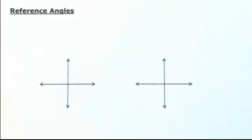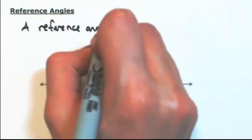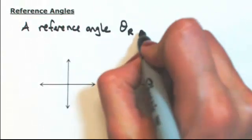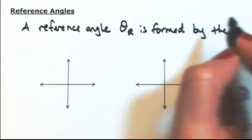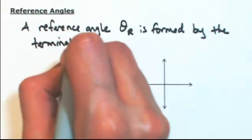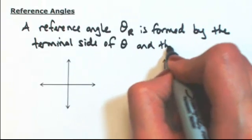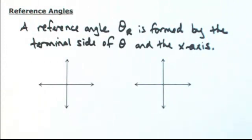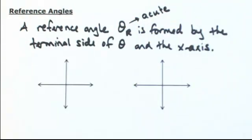Let's define a reference angle. A reference angle, which we're going to call theta with a subscript r — so theta r — is formed by the terminal side of theta and the x-axis. There's one more thing to add: theta r is always going to be acute, so it's going to be between 0 and 90 degrees.